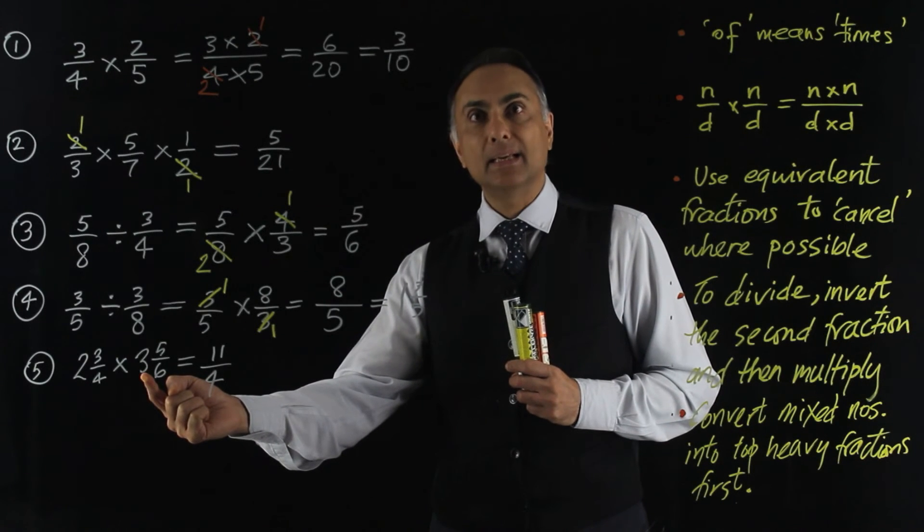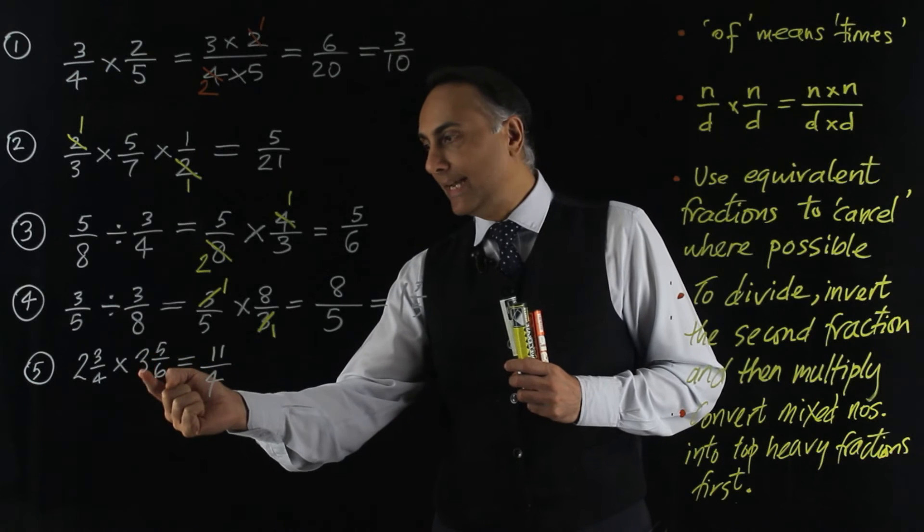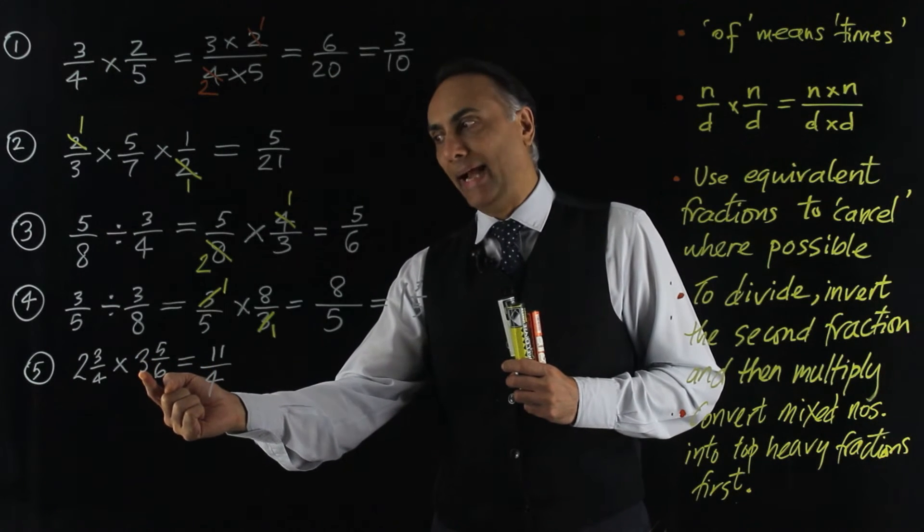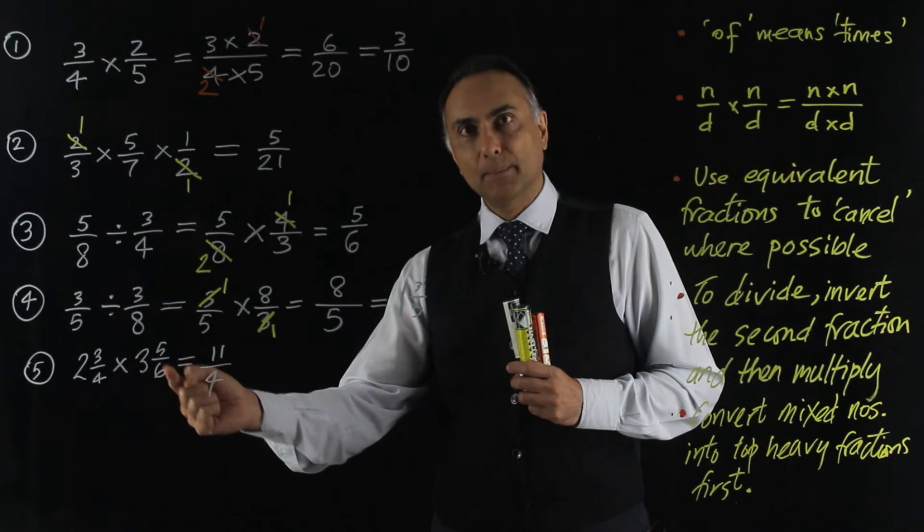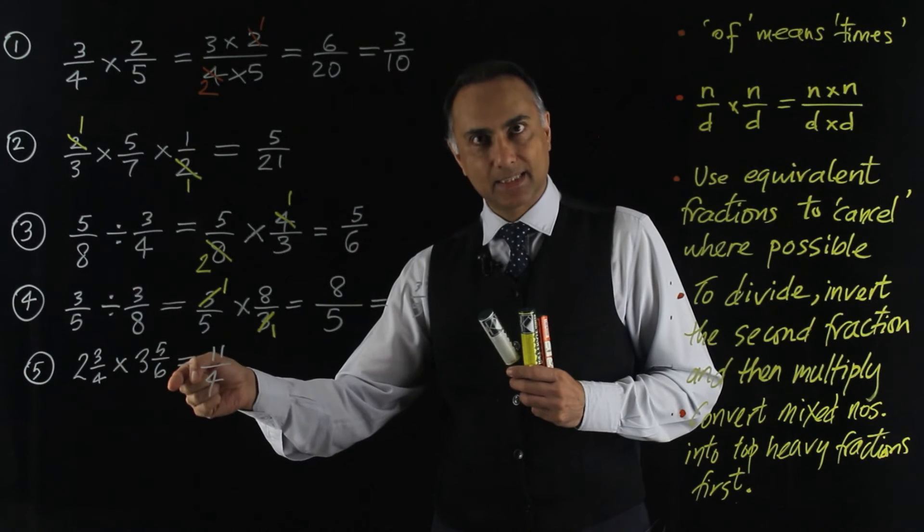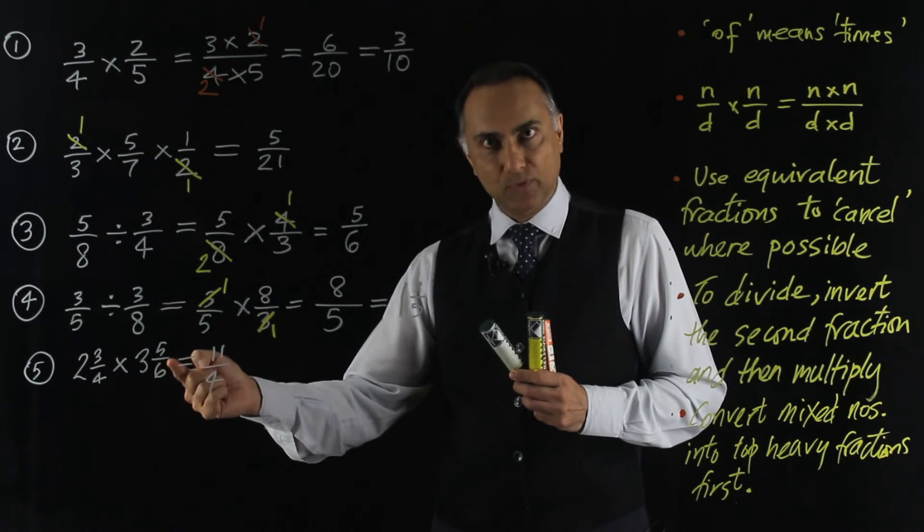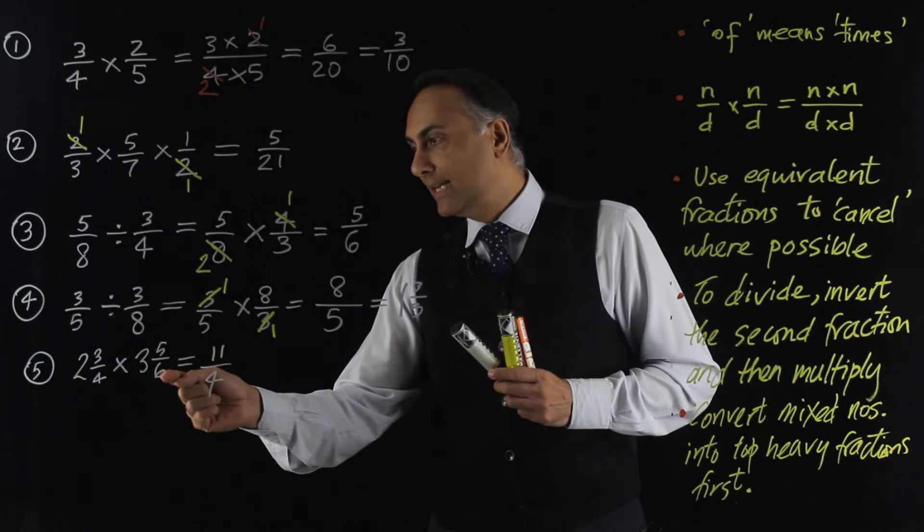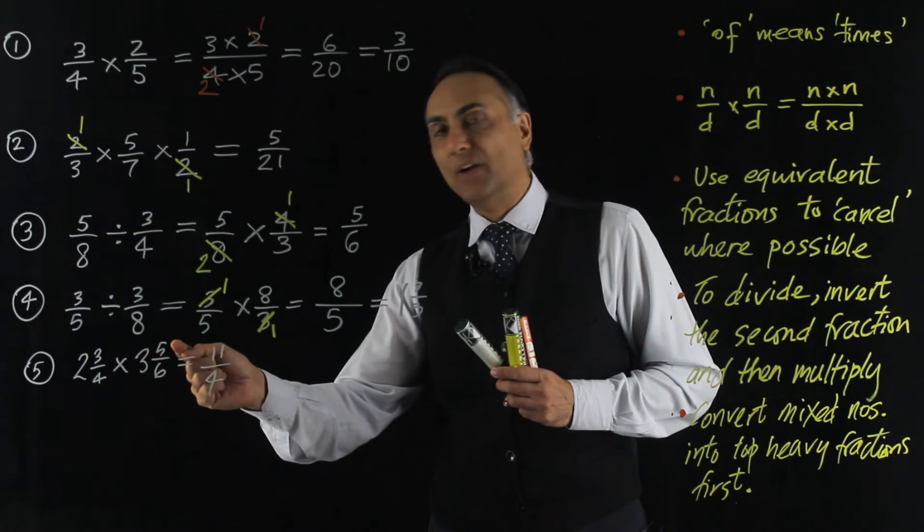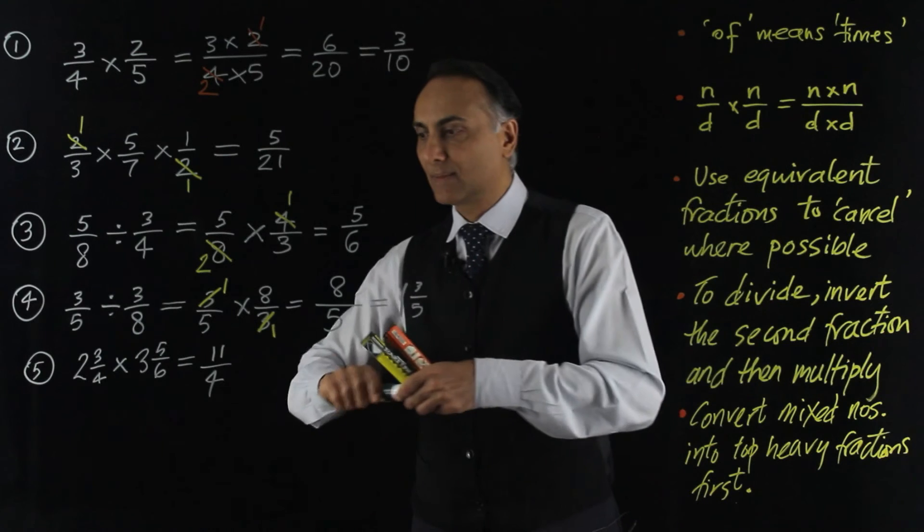is 18 sixths. So that's 18 sixths. Add another 5 sixths makes 23 sixths. But the shorthand way of doing that is to say 6 threes are 18. 18 add 5 is 23. So it's 23 sixths.